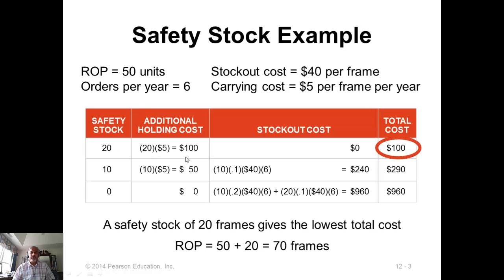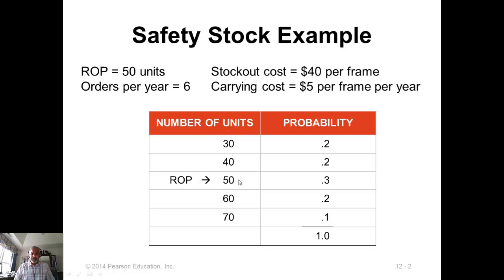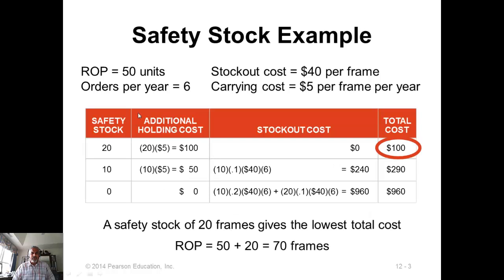What we need to do is start from the maximum. If you set your ROP to 70, you will never run out of stock. Then consider ROP = 60, computing the holding cost and stockout cost. Then ROP = 50, which is the current ROP without safety stock — you don't need to consider 40 or 30 since you'd never go below your base ROP. For each level above 50, compute the additional holding cost and stockout cost, then select the option with the least total cost.